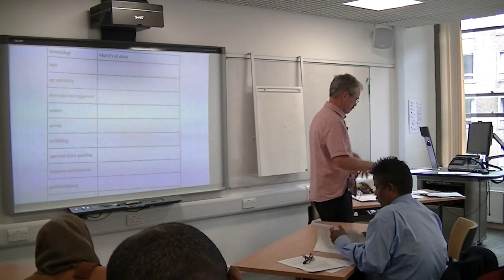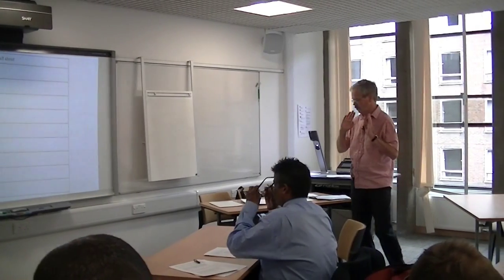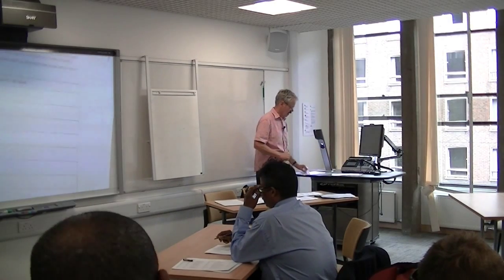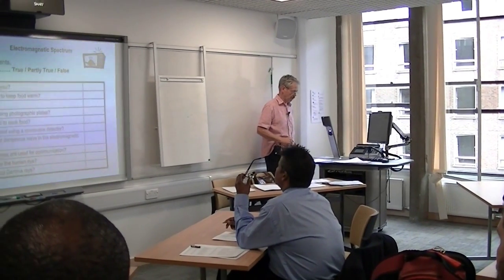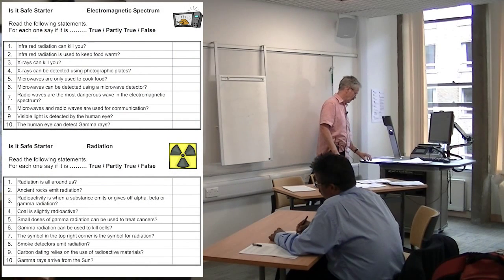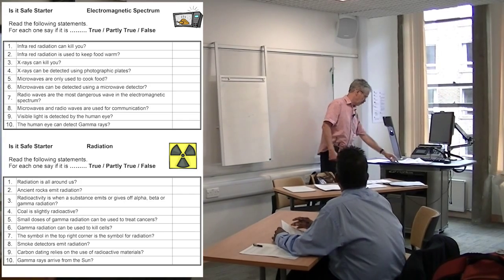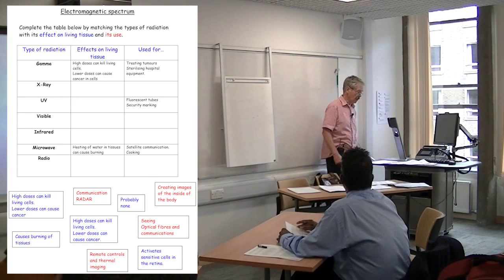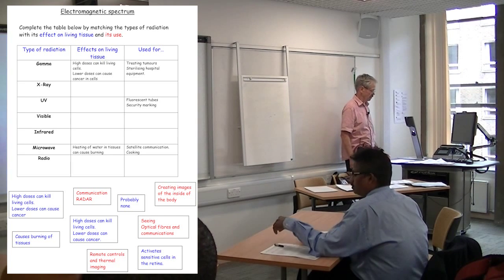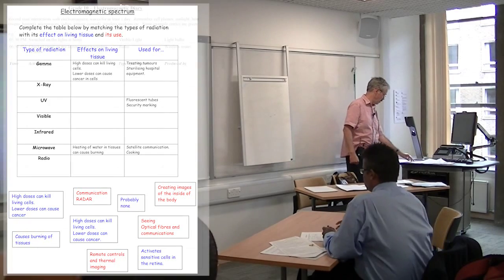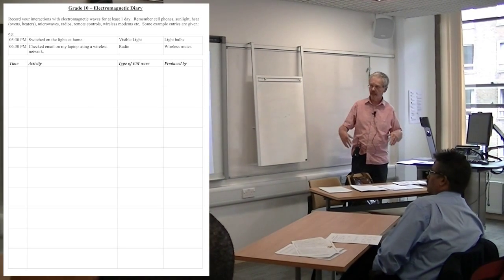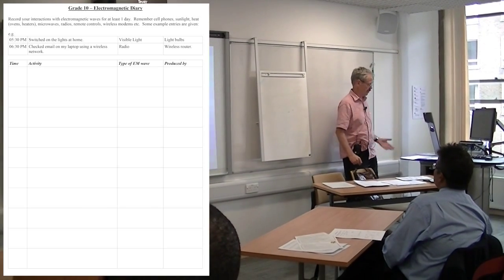In order to get a reasonable amount done in this session, we'll just start talking now. I'll briefly describe the worksheets so you know what we're talking about. This one has some statements and you're asked to say whether they're true, false, or partly true — all about the electromagnetic spectrum. This one has boxes of text at the bottom that you've got to put in the correct places in a table about uses and effects on living tissue of different types of radiation.